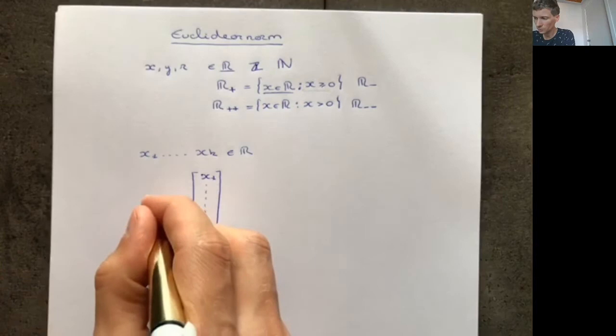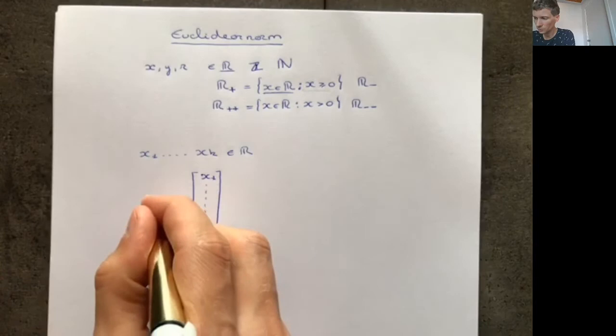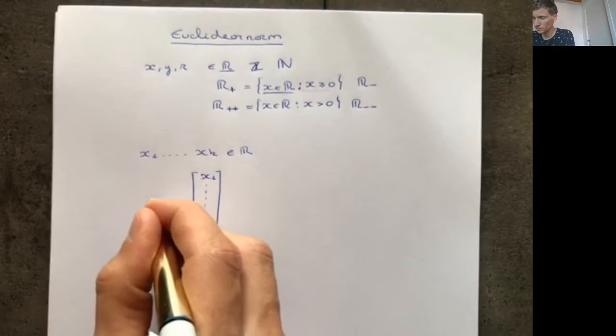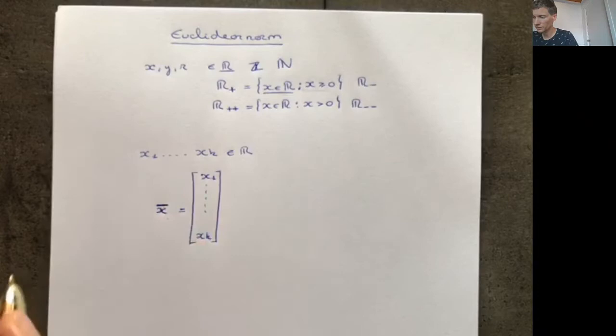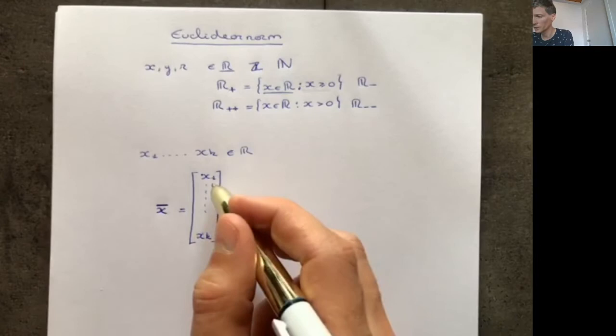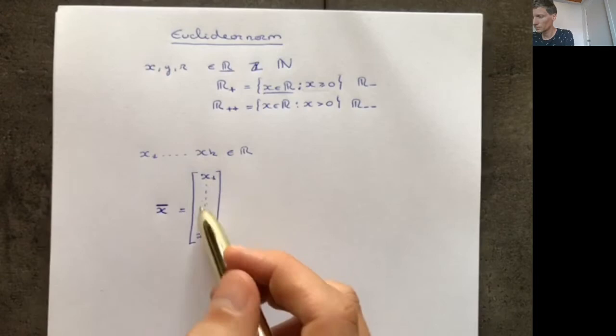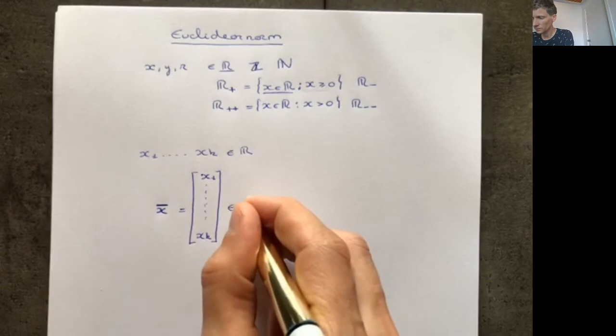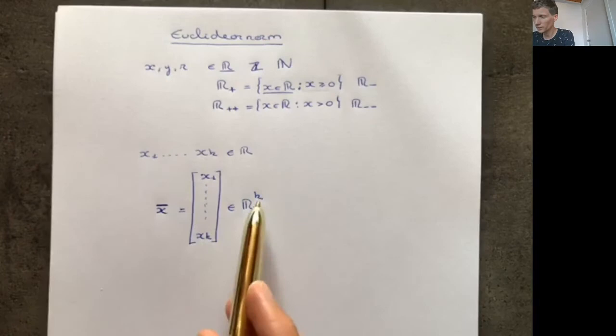In the course notes, this object is denoted by bold x. Because I cannot write in bold, I will write a line on top of the letter. So if I write a line on top, this means it is a vector. A vector is just a collection of real numbers — here there are k of them. In this case, we say this vector is an element of ℝᵏ, where k is the number of elements in this object.